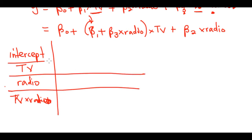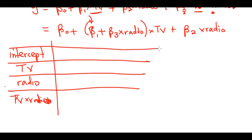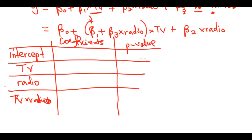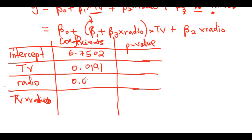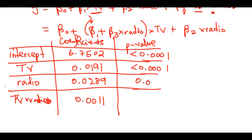Skipping some columns, the key output shows coefficients and p-values. The intercept coefficient is 6.7502; TV is 0.0191; Radio is 0.0289; and the interaction term TV×Radio is 0.0011. The corresponding p-values are: intercept < 0.0001, TV < 0.0001, Radio is 0.0014, and the interaction term < 0.0001.